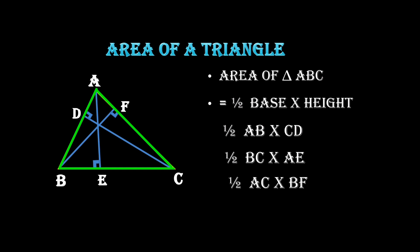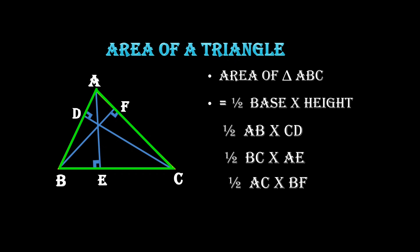When finding the area of a triangle, we must multiply the base with its corresponding height. The area of a triangle depends on the base and height, irrespective of the type of triangle.